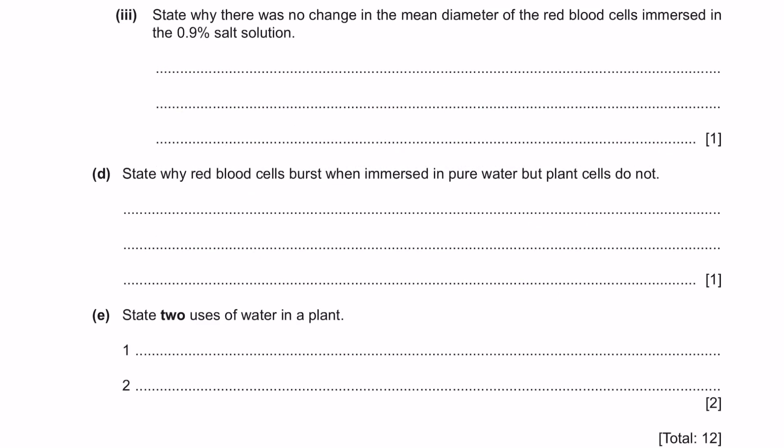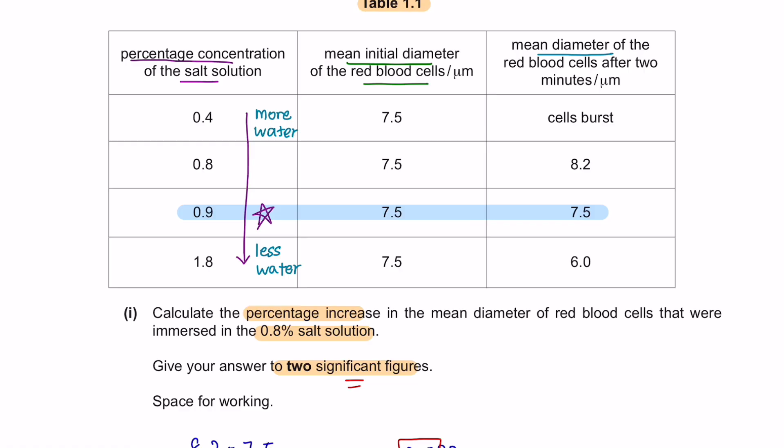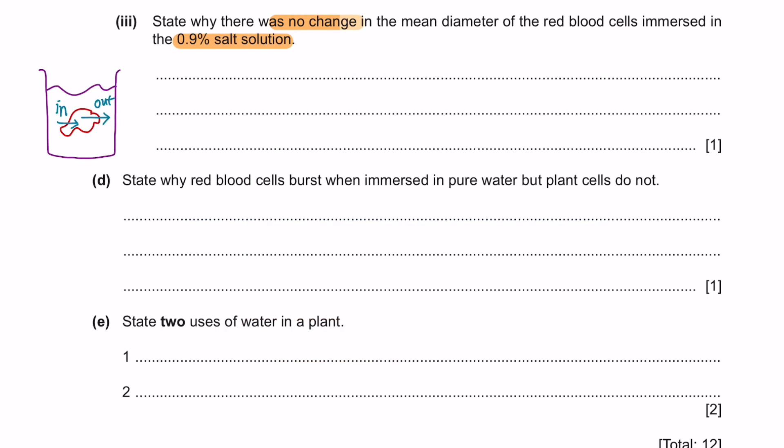Question part 3 state why there was no change in the mean diameter of the red blood cells immersed in the 0.9 salt solution. For the 0.9 salt solution, the mean diameter remained the same before and after the experiment. When the size of the cell does not change, this is because the water potential is equal between the red blood cell and the solution, meaning that there is no net movement of water. The command word here is state why. If you are asked for why, you can always start with this is because the water potential was equal between the red blood cell and the salt solution. Or you can say because there was no net movement of water.